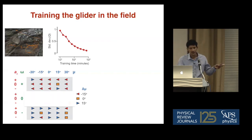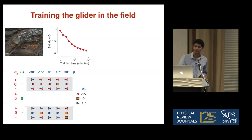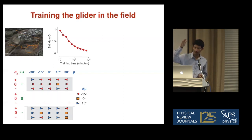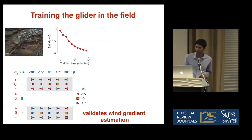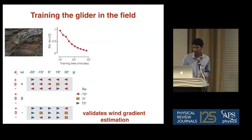We can take this policy, put it in the glider, and see how well it does. This is an example trajectory from the field: the glider starts from about 100 meters height and goes all the way to 800 meters — it actually cuts off there because it goes into the clouds. What limits how far it goes is our receiver's range. It can stay aloft for an hour without any engine. Doing repeated three-minute trials in the field, we show significant improvement in the learned policy.